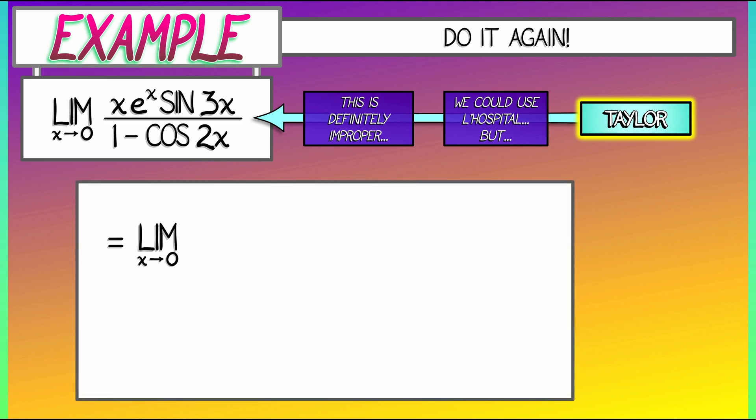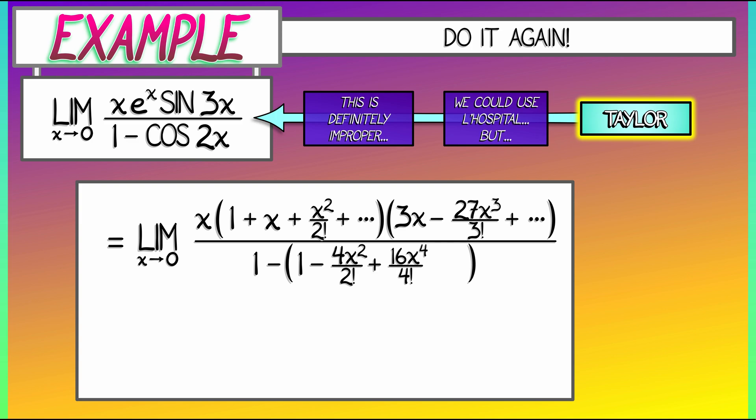Consider the limit as x goes to 0 of what? In the numerator, we're going to expand this out. We get x times e^x, which is 1 plus x plus x squared over 2 factorial, and so on. All of that times sin(3x). That is 3x minus 27x cubed divided by 3 factorial, and so on. In the denominator, we have 1 minus the Taylor series for cos(2x), which is 1 minus (2x) squared over 2 factorial, and then higher order terms.